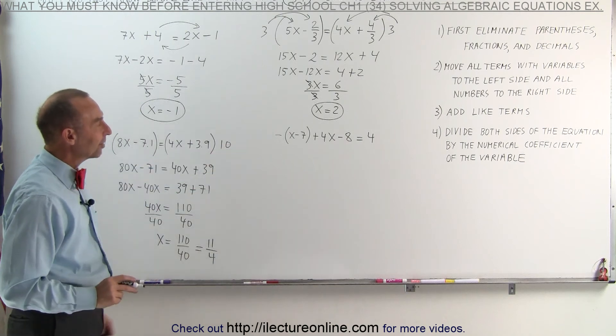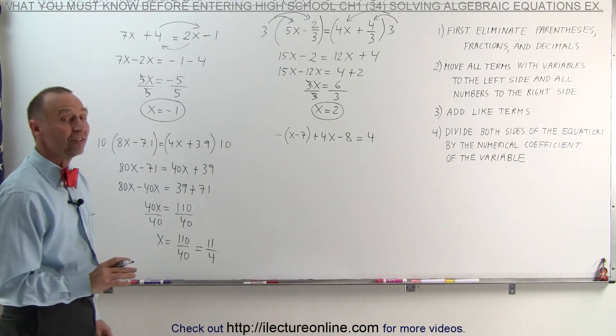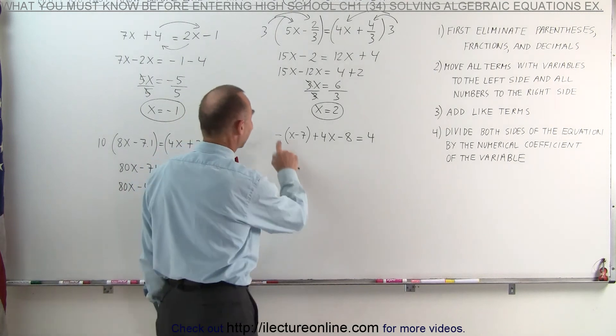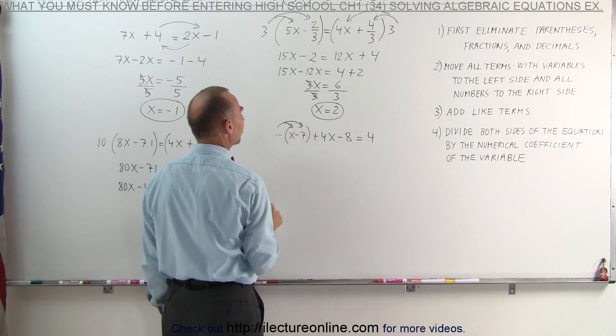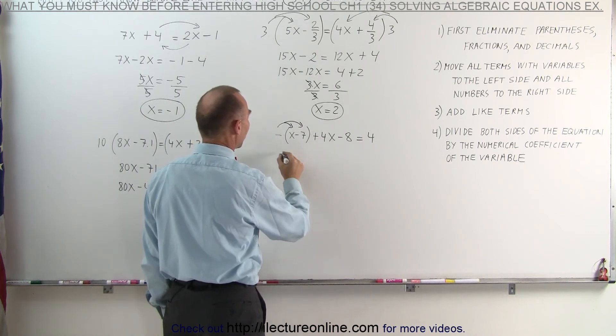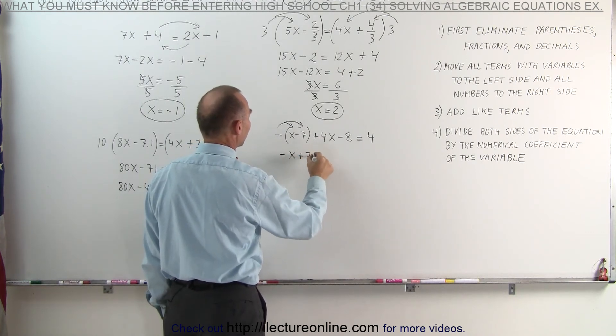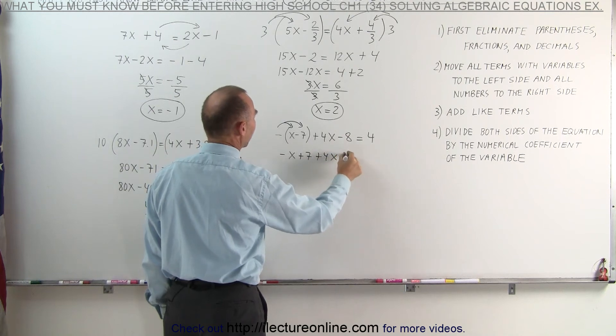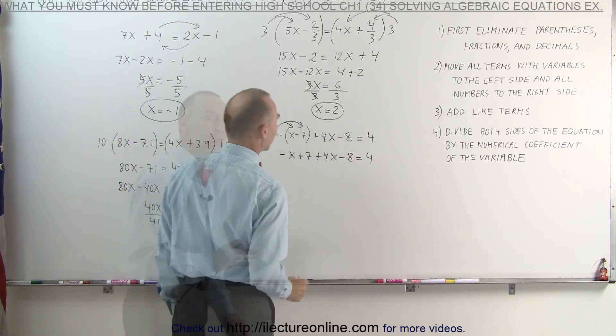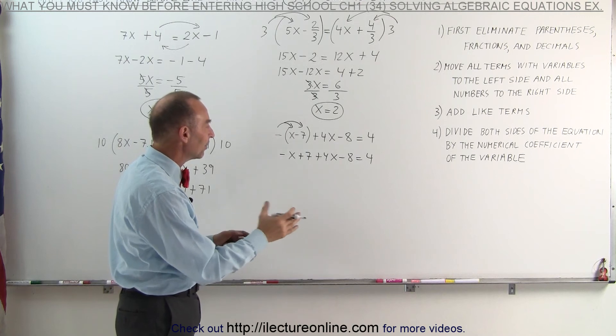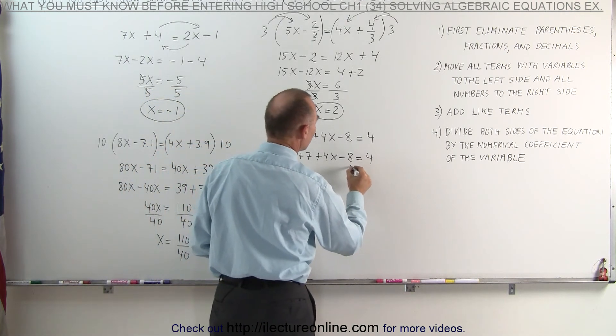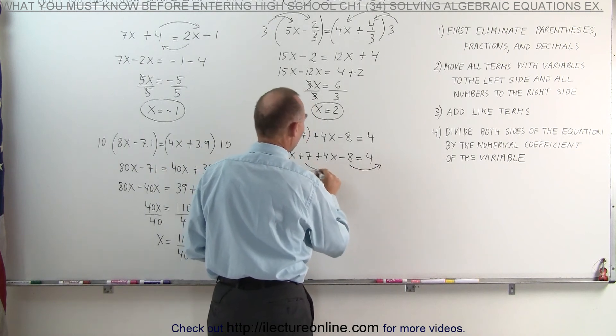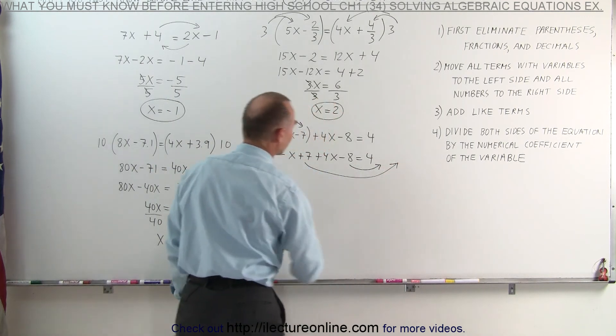And finally, our last example. Notice we have parentheses. We need to get rid of those parentheses first. We have a negative in front of these parentheses, which means when we distribute the negative, think of it as a negative 1, we change the signs inside. This becomes minus x plus 7 plus 4x minus 8 equals 4. All the terms that have an x in them already are on the left side of the equation. But we do need to move the numbers, the negative 8 and the plus 7, to the right side of the equation.